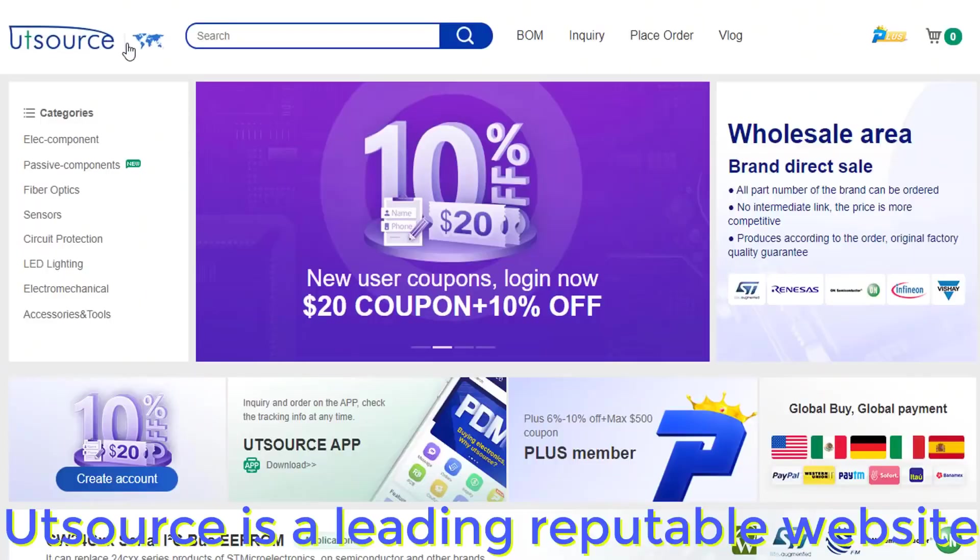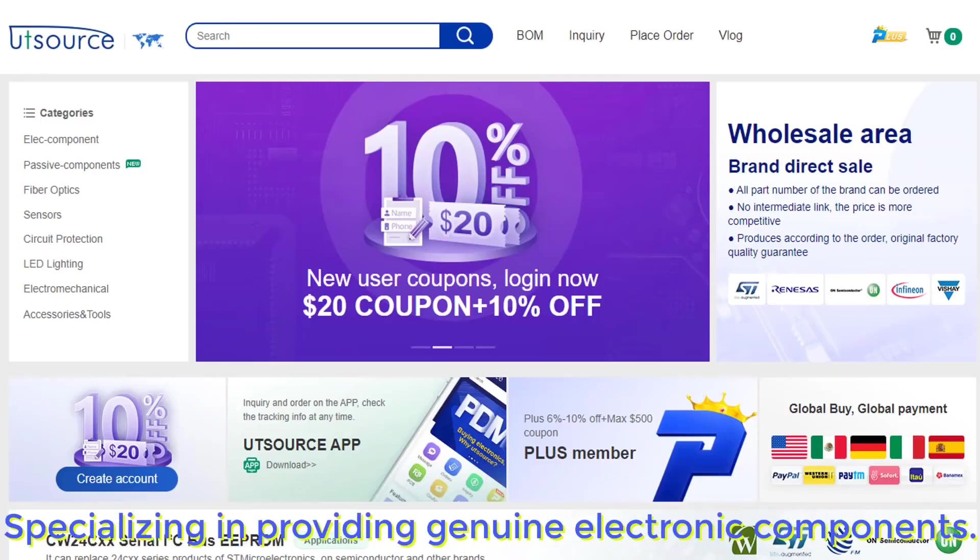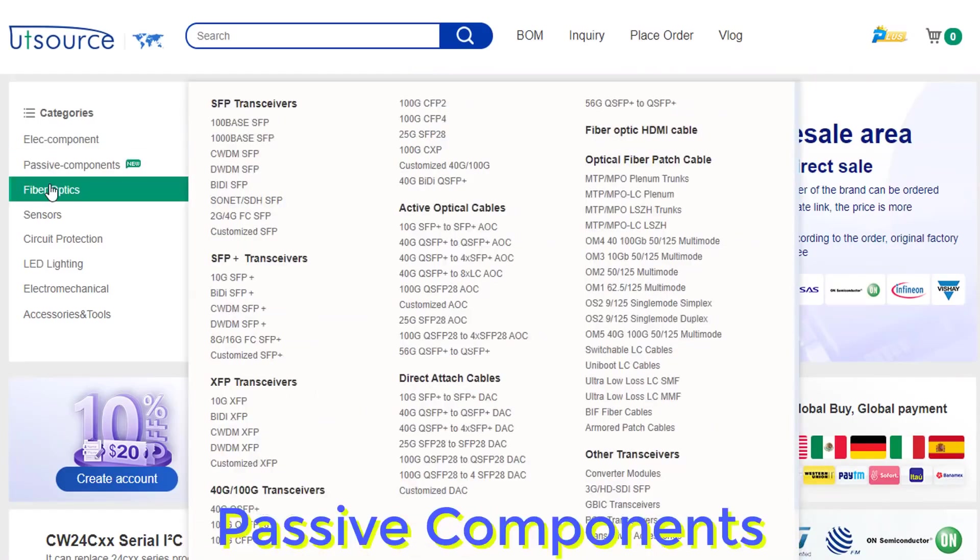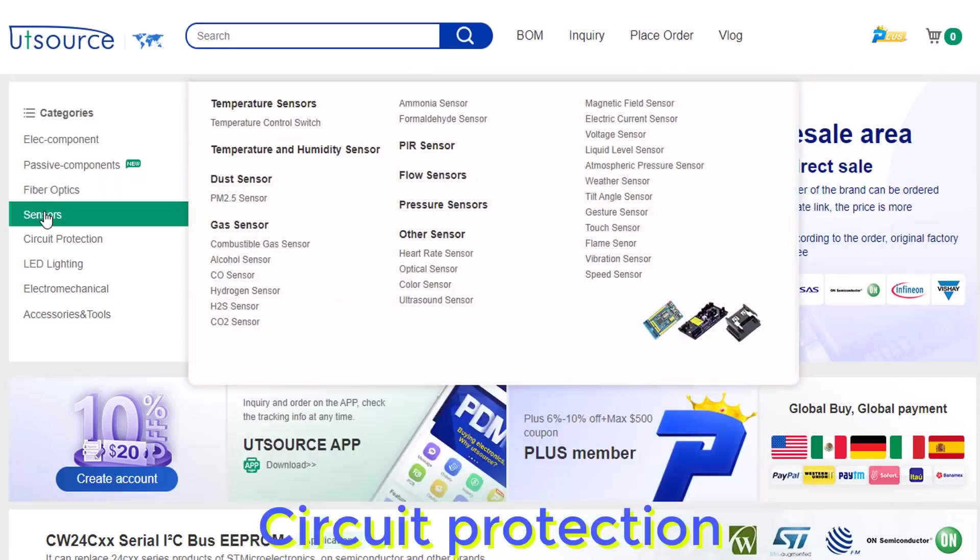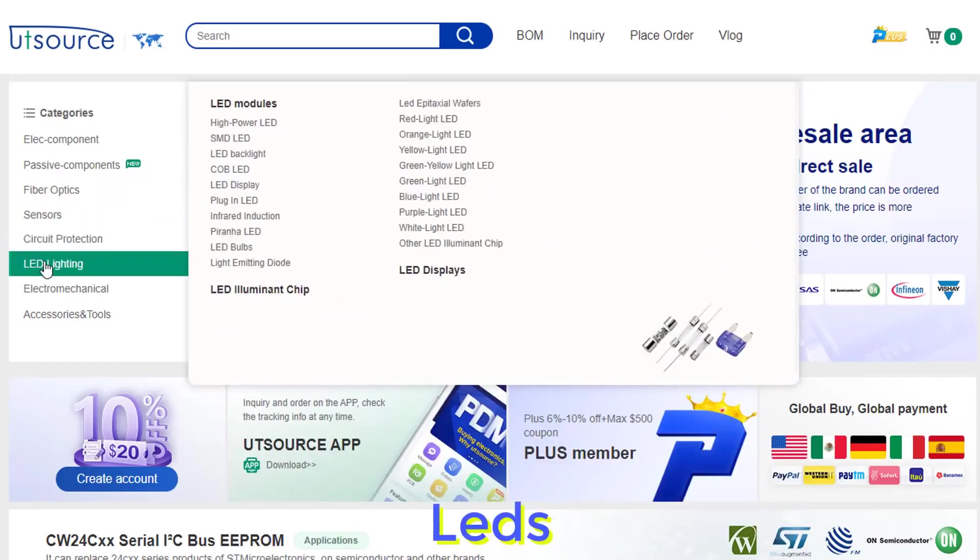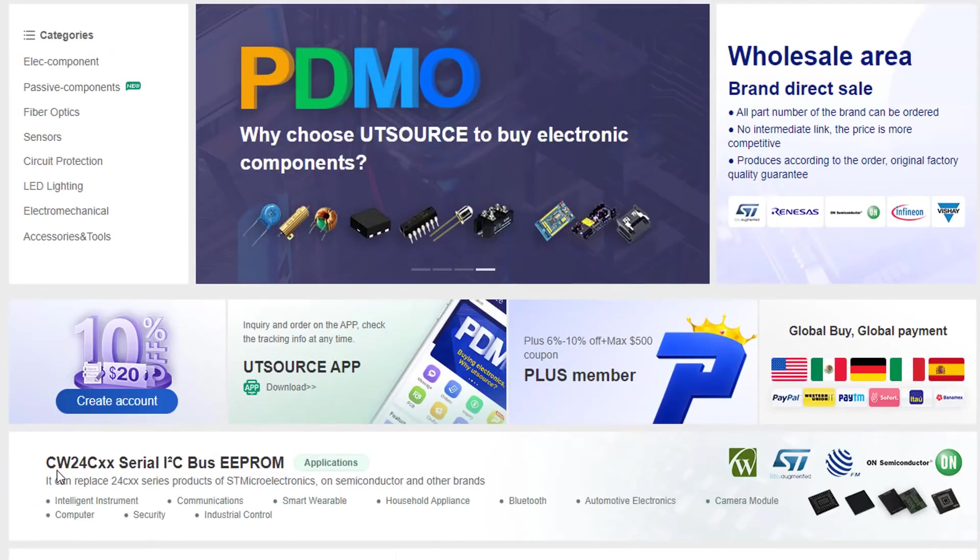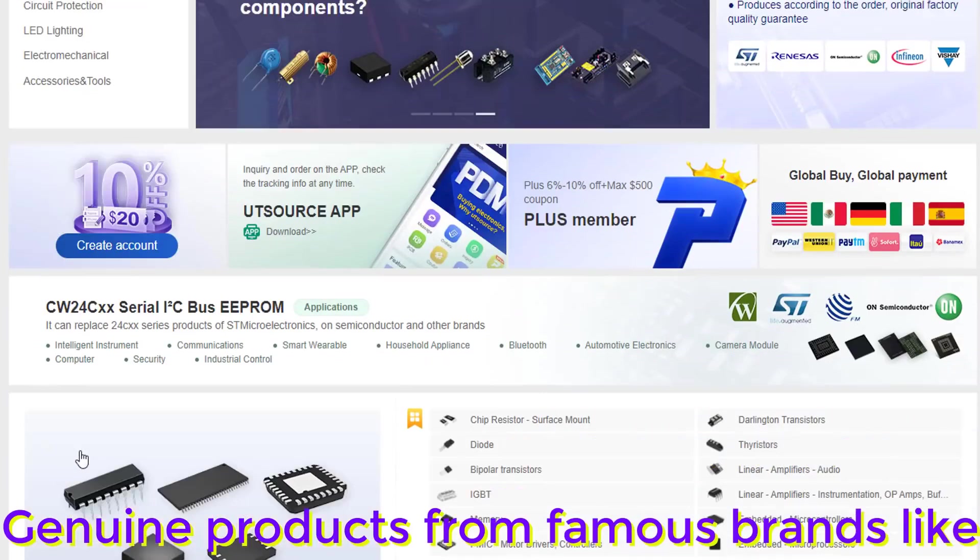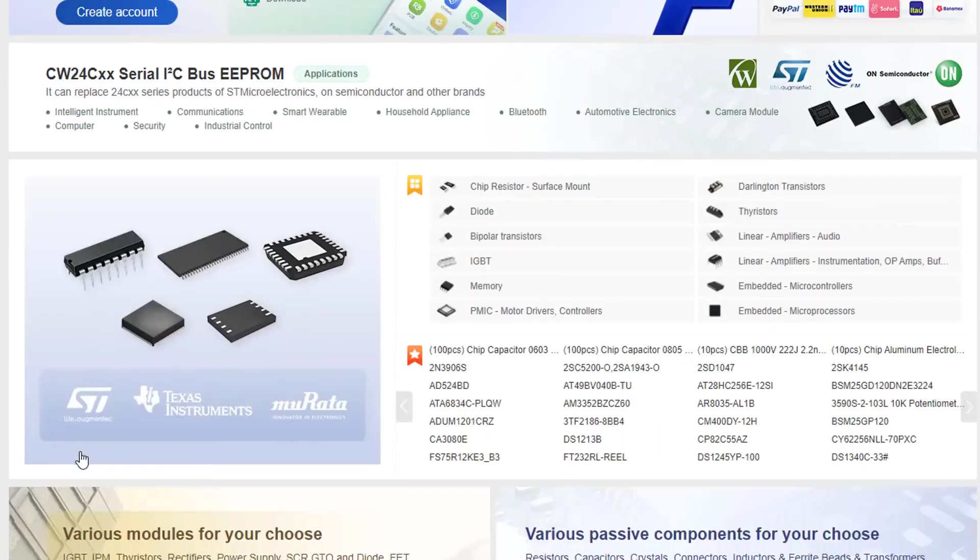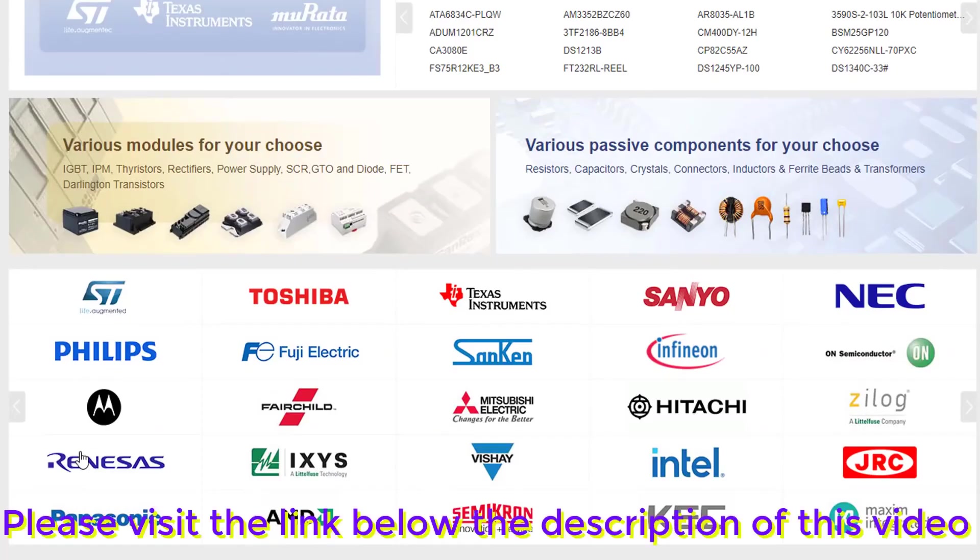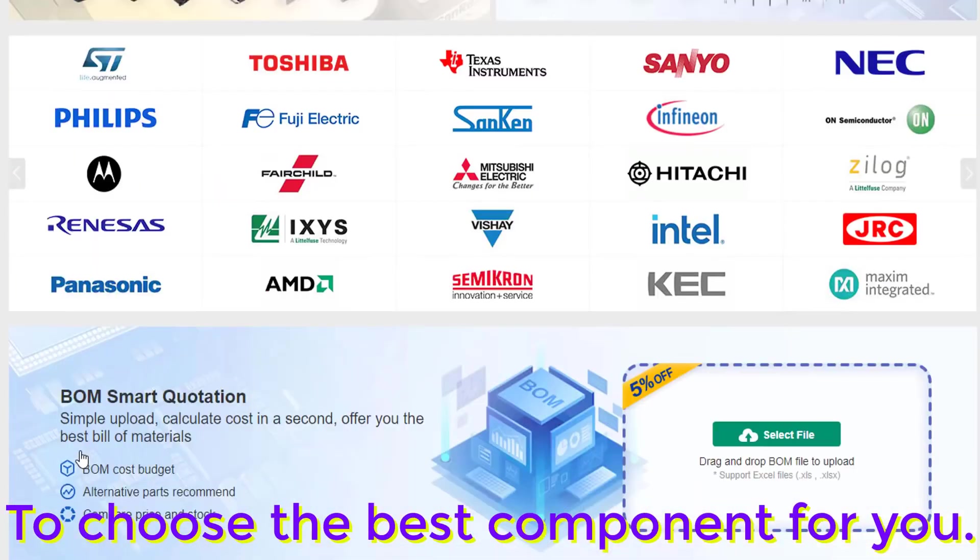USource is a leading reputable website specializing in providing genuine electronic components. You can buy everything here: electronic components, passive components, sensors, circuit protection, LEDs, electromechanical, accessories and tools. Genuine products from famous brands like Toshiba, Texas, Senio, NEC, Philips, Sanken. Please visit the link below the description of this video to choose the best component for you.